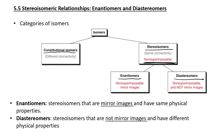Enantiomers are mirror images of each other but non-superimposable. They have similar properties, and we can differentiate them through optical rotation or polarimetry. Diastereomers, on the other hand, are not mirror images of each other. They have multiple chiral centers, are not mirror images, and have different physical properties — different densities, different boiling points, different melting points.